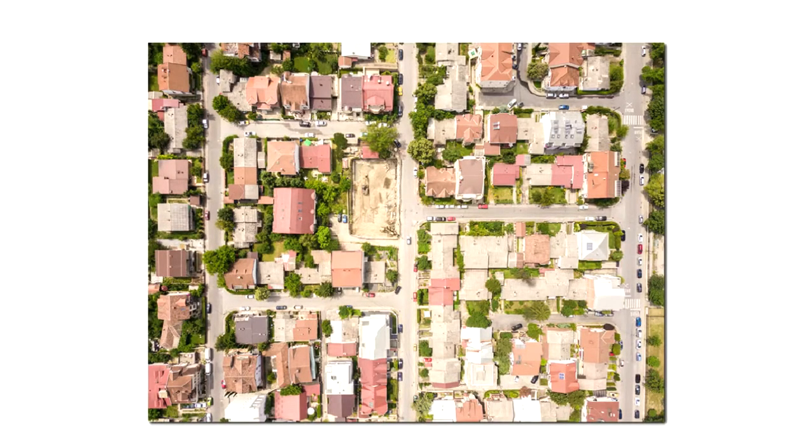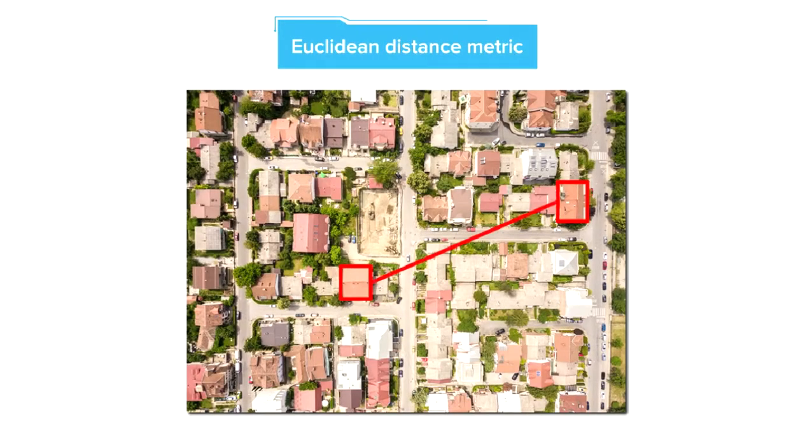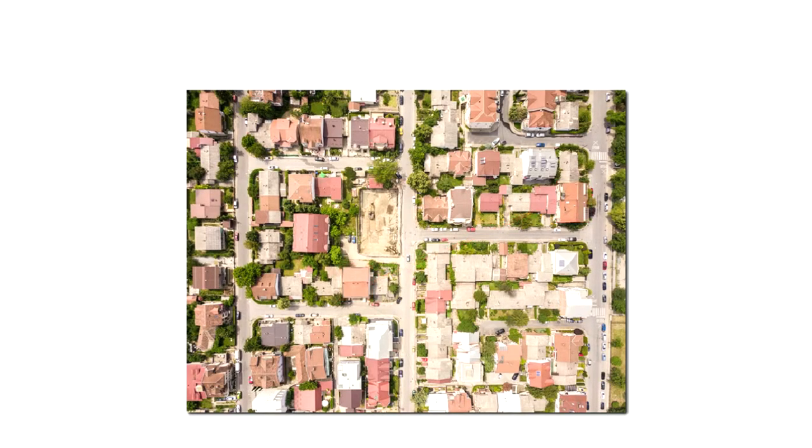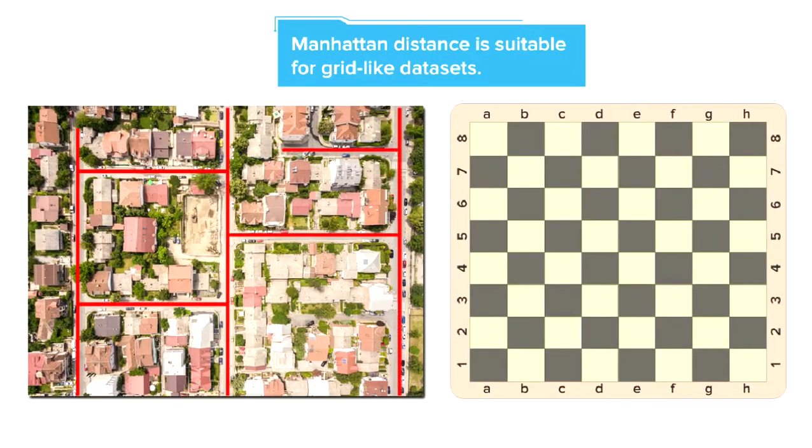Similarly, if you are working with some geographical data which comprises calculating road distance between houses as shown below, again, in this case calculating the Euclidean distance is not the right way. That is because Euclidean distance is the shortest path available but the road is not available for that shortest path. So we can see that in general, Manhattan distance is suitable for grid-like data sets.